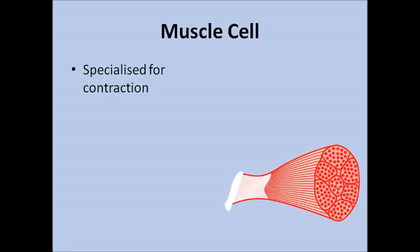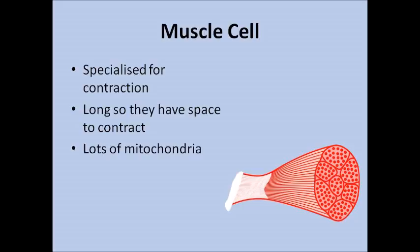Muscle cells are specialised for contraction. They're very long so they have space to expand and to contract. They're also packed full of mitochondria — again, mitochondria is where respiration happens, so it provides lots of energy. Muscle cells need lots of energy, so having lots of mitochondria allows that to happen.